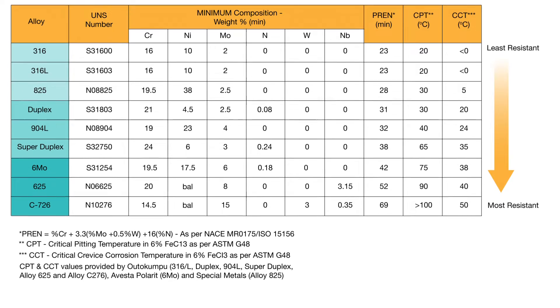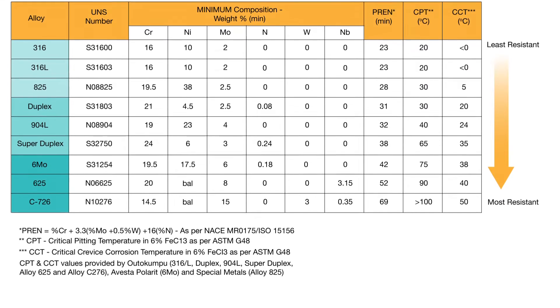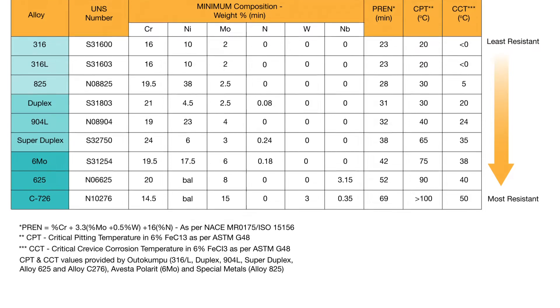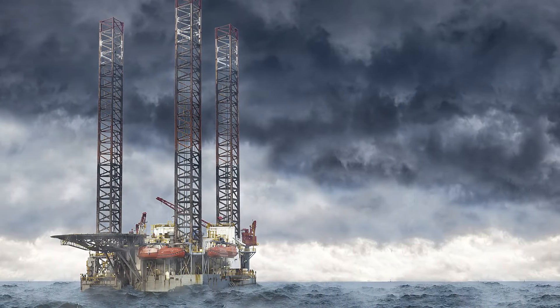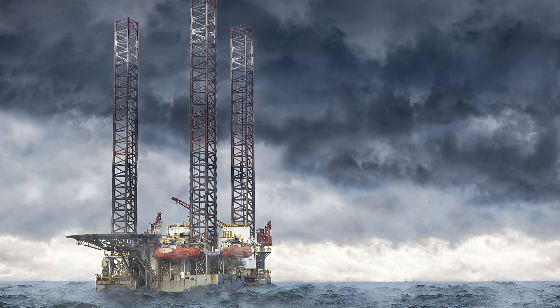Larger values of PREN indicate a higher resistance. When pitting is a hazard, as it is the case in chloride-containing environments such as seawater, this is very common in the oil and gas industry.